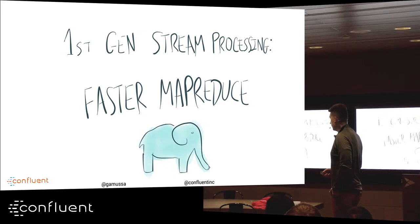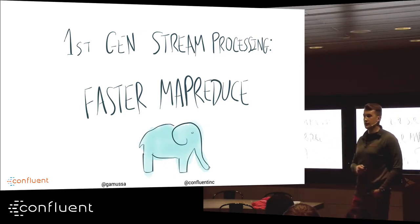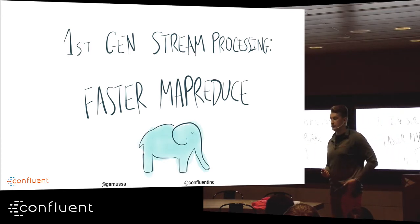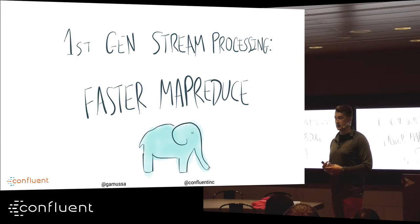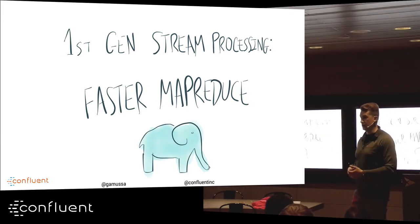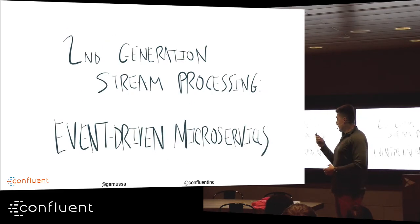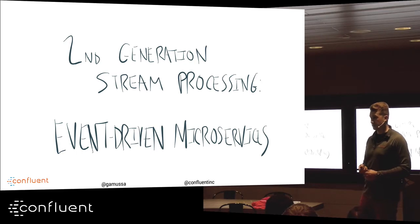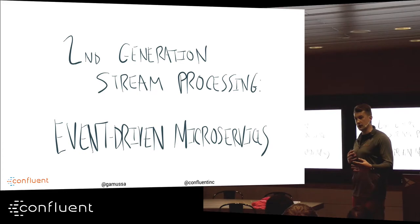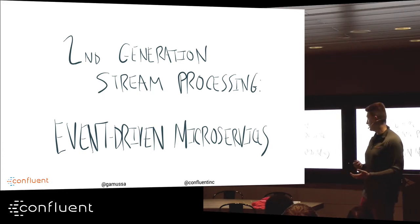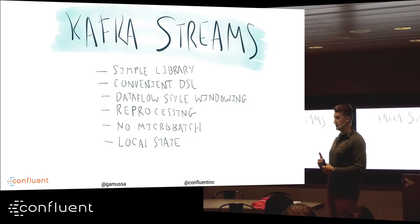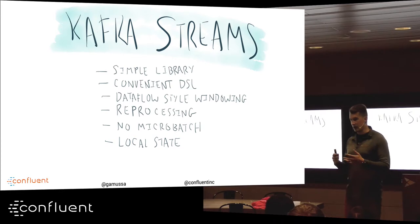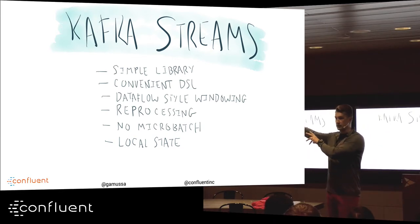The first generation of processing data was Hadoop, which provided a breakthrough in how we deal with distributed processing, big amounts of data, and distributed reliable storage. Now we're getting into a world of processing streams from event streams of microservices. Kafka Streams is very important for Java developers — it's a cool API for building applications without getting lost in complexity.